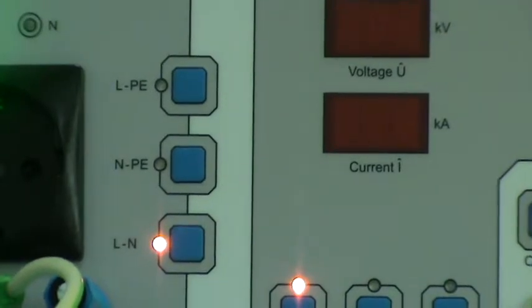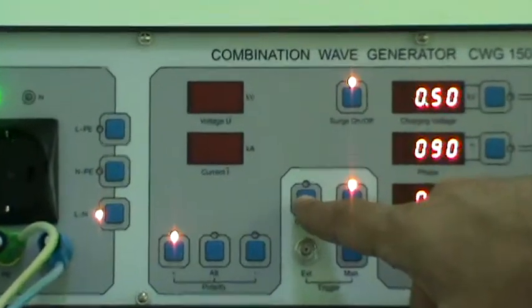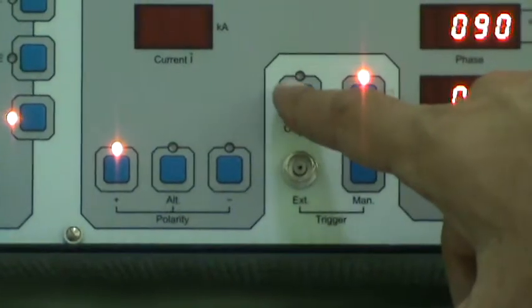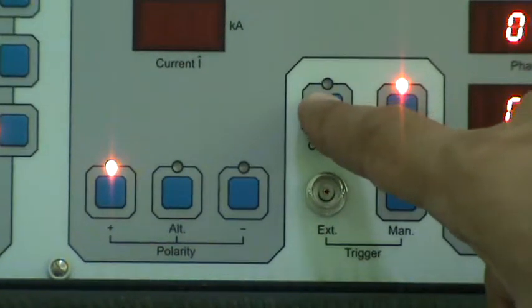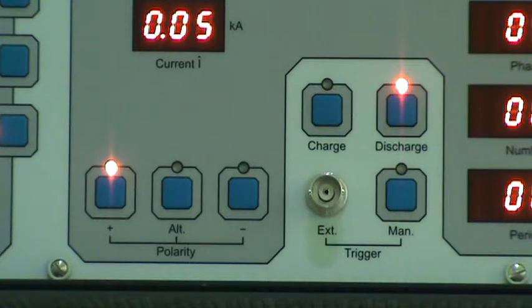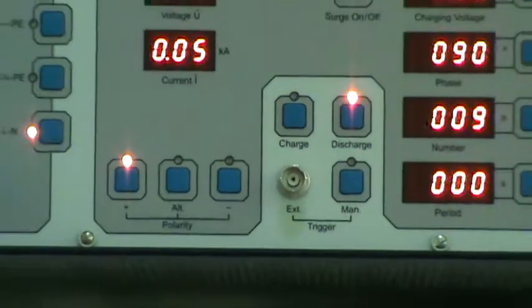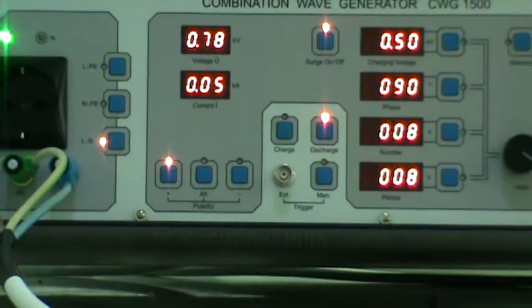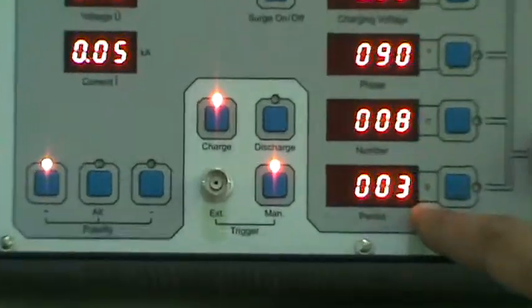To start the test press charge button. Here this is the charge button. To start the test we have to press it. This LED should glow. Now test has started. It will charge the coupling network and discharge automatically on EUT power line. Charging and discharging will keep continued for the specified number set. Here it is 10. Here we can see the speed is elapsing and numbers are coming down.